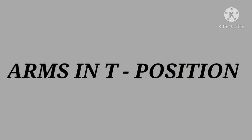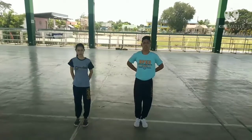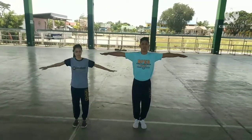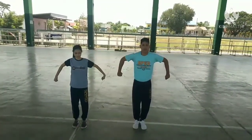Arms in P position: Arms at the side horizontal, elbows bent at right angles, where arms are parallel to the body, facing backward.